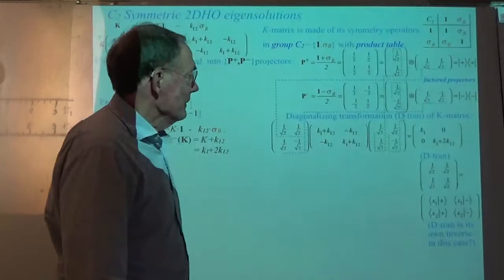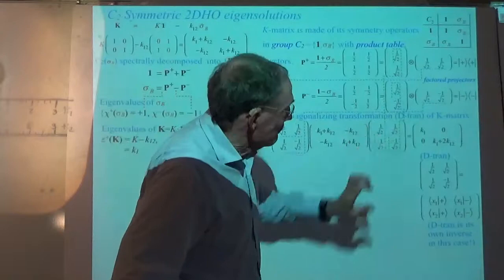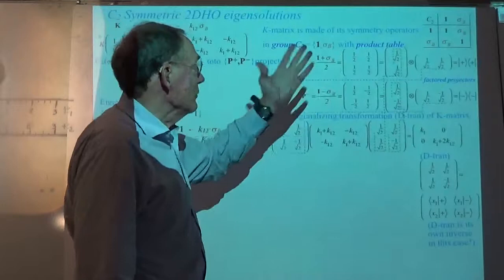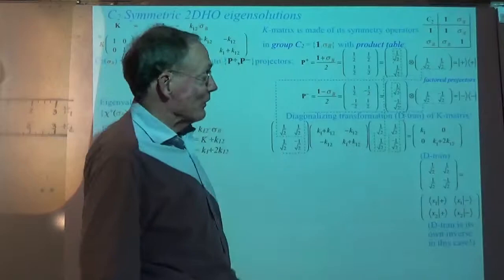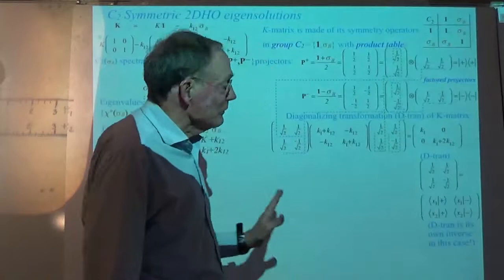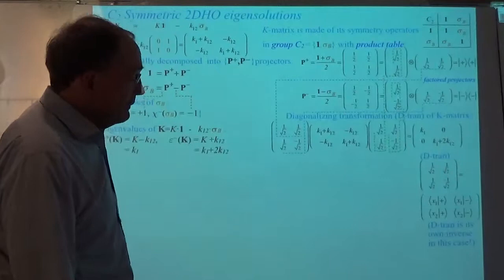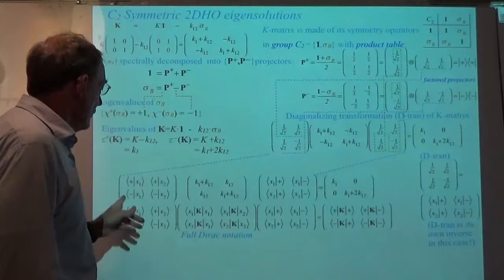Here is all of this notation being played out in full direct notation. The philosophy is: you start with a basis in which it's easy to write the equation of motion, and you seek, by symmetry, to go to a basis where the equation is easy to solve — that is, you decouple, you get the off-diagonal coupling to go to zero. In this case, the plus and minus bases, the even and odd bases, serve to make this spring matrix diagonal.